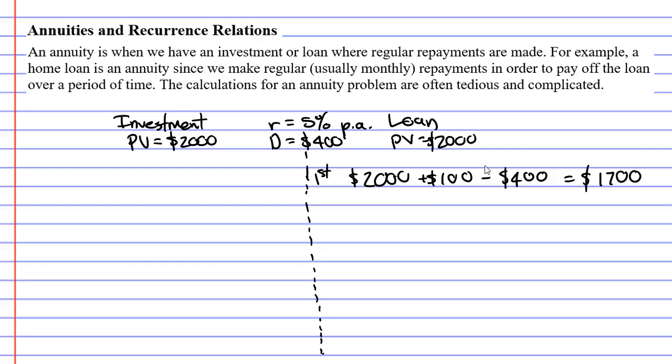How would this look for an investment at the end of the first year? Once again, we start with our present value of $2,000, and the bank is going to, instead of charging us interest, it's going to give us interest. So we're going to add on the $100 of interest again.